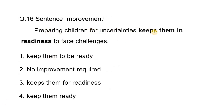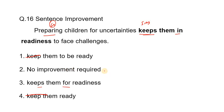Sentence improvement: 'Preparing children for uncertainties keeps them in readiness to face challenges.' The subject is 'preparing' — children are not the subject. 'Preparing' is a gerund, which is singular. A singular subject takes a singular verb — so 'keeps them' is correct. No improvement needed; 'keeps them in readiness' is already correct.